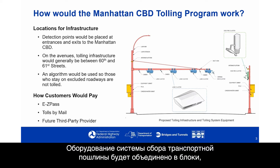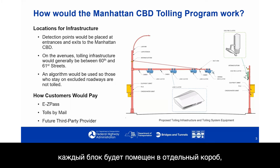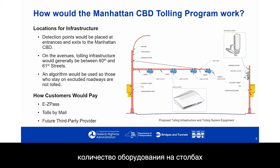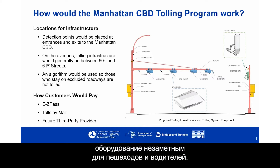Importantly, the tolling system equipment will be clustered and housed in single unit enclosures, as shown on the bottom. The enclosures are purposely designed to minimize the amount of equipment on the poles and to reflect light in a way that makes them less visible to someone walking or driving.